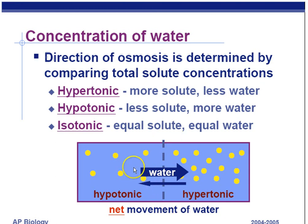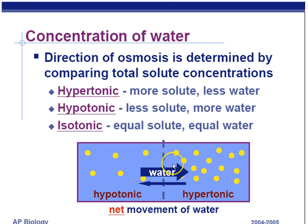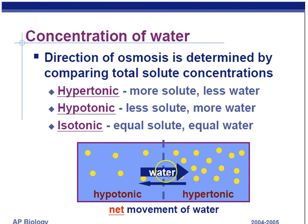Water moves from where it's more pure to less pure — from hypotonic (less dissolved stuff, more concentrated water) to hypertonic — by the diffusion of water called osmosis. Keep in mind the water actually goes both directions, however more water is going from hypo to hyper. If a solute can move through the cell membrane, it goes down its concentration gradient from high to low. The net movement of water is from high to low water concentration.